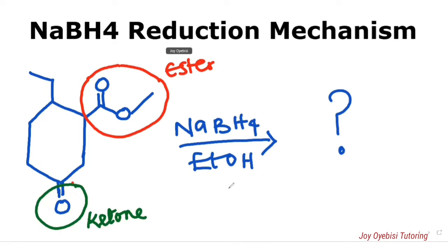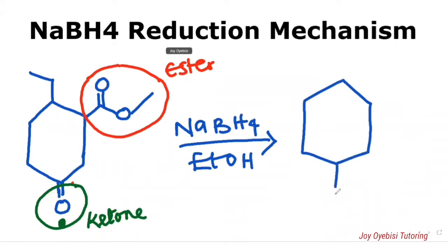We're going to leave the ester the way it is, because this particular reagent cannot reduce an ester. So the first step here is to give the product. When you're given something like this and you're asked to give the product, all you need to do is change the ketone part to OH. So this is going to be our product.